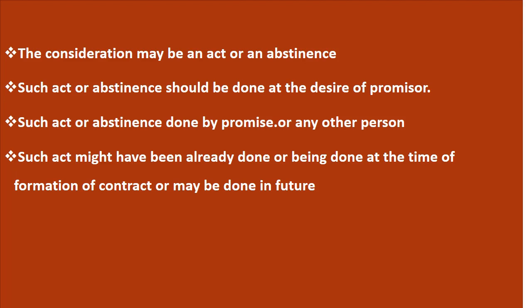Such act or abstinence should be done at the desire of the promisor. This act of doing or not doing should be done at the desire of the promisor. Suppose A requested B for construction of a house; then the construction is done as per the requirement of A, not at the request of any other person. Point three: such act or abstinence may be done by the promisee or any other person. As per Indian law, any other person can fulfill this on behalf of the promisee.